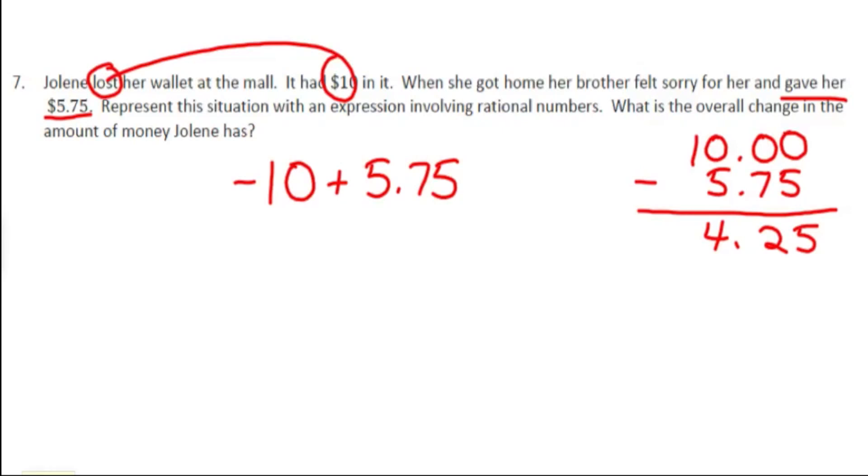That doesn't mean the answer is positive $4.25, but that's the numerical part of our answer. So we have 4.25. But since the amount that she lost is $10, which is a lot greater than what her brother gave her back, the overall change, which is what the question asked, is negative $4.25. So this is the change in the amount of money.